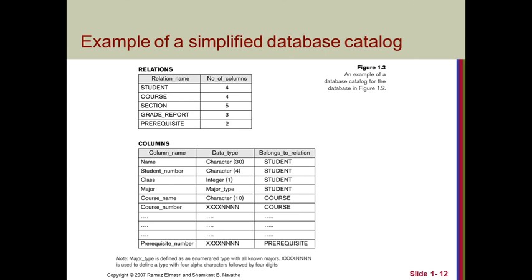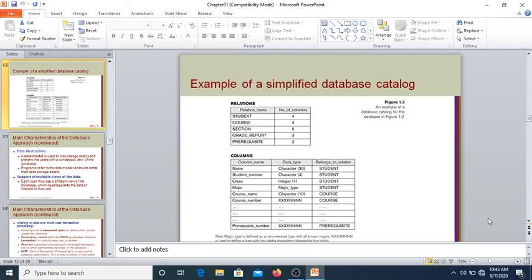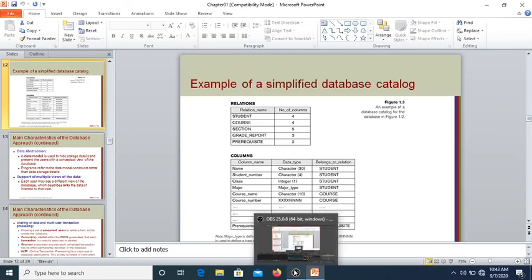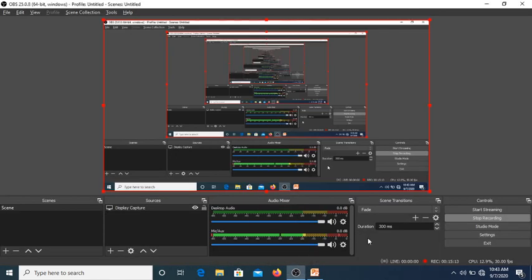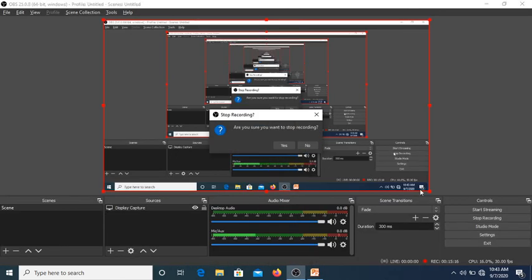The simplified version of the database catalog includes relations, where each entry has a relation name, column name, data type, and the relation it belongs to. With this we will stop and continue with further characteristics in the next class. Thank you.